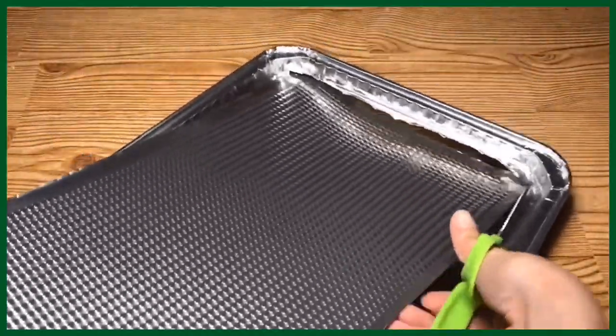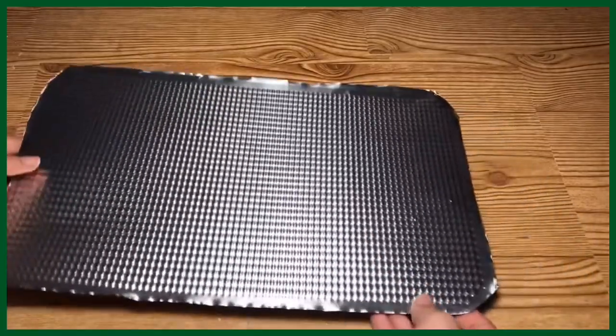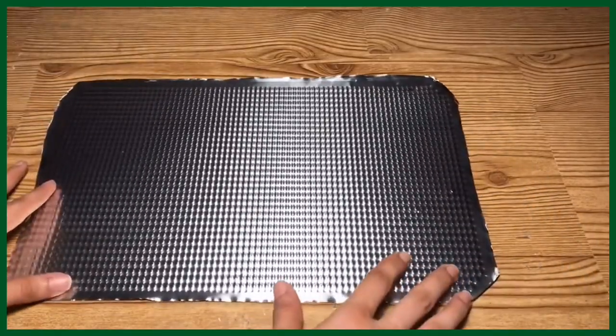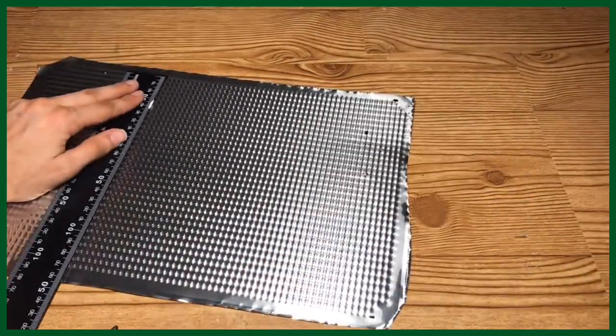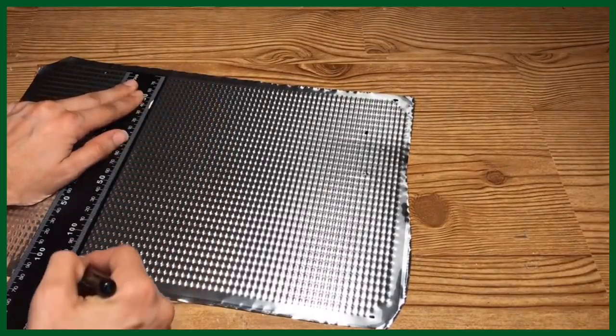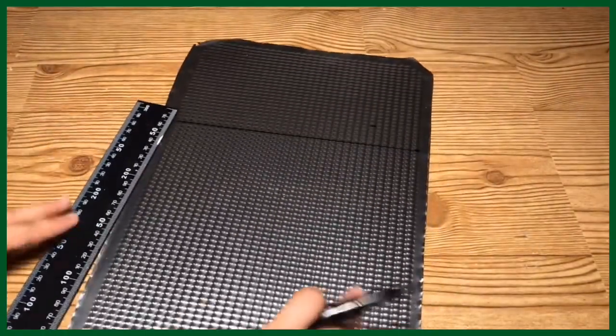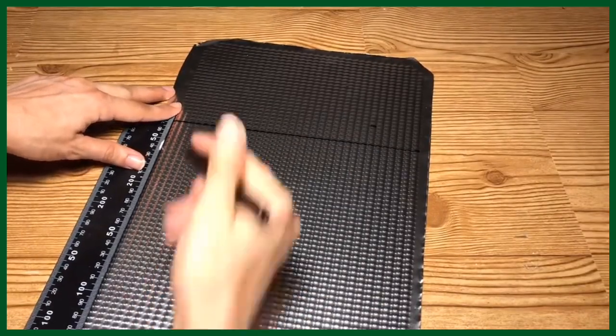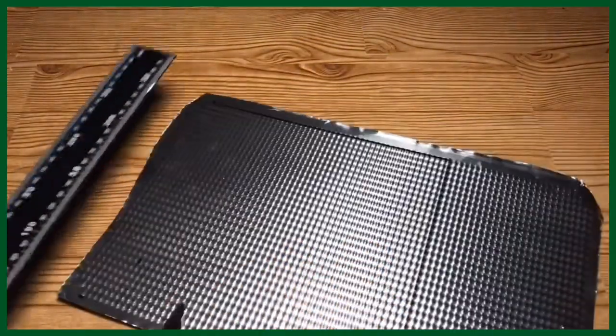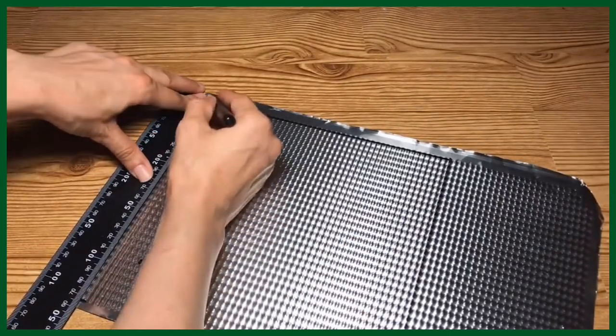Once I have this section cut out, I'm actually going to be cutting it into a square. Now I'm going to cut the top portion off and the side portions off to form a square. You can make this whatever size you want. I didn't really measure it up, I just cut out a square shape.